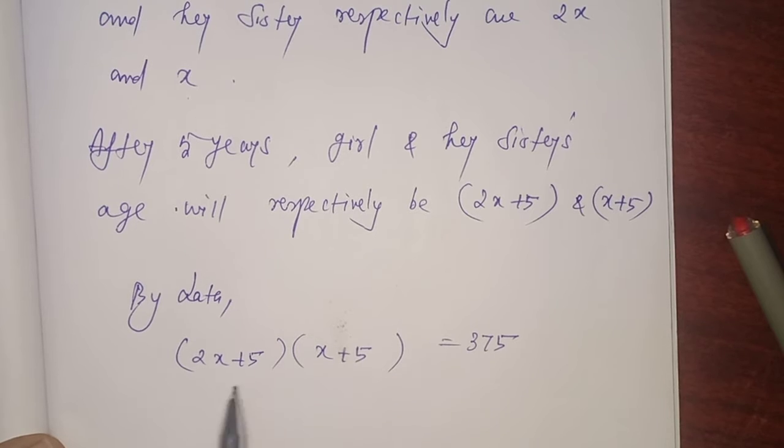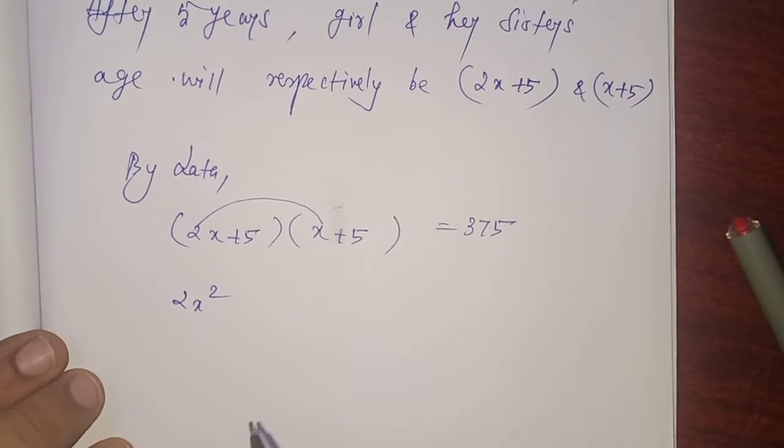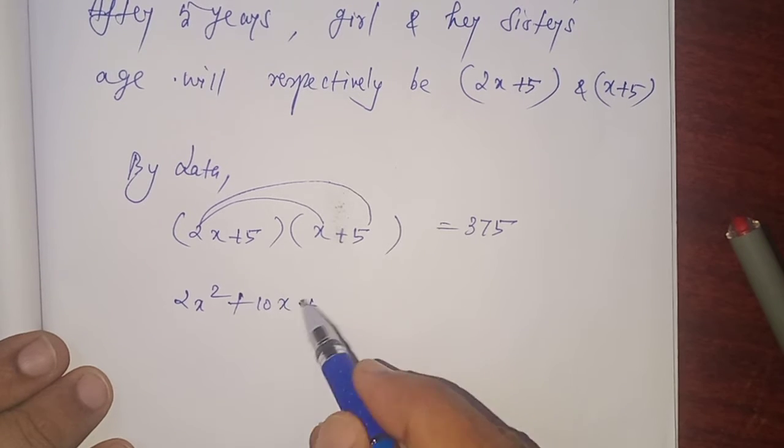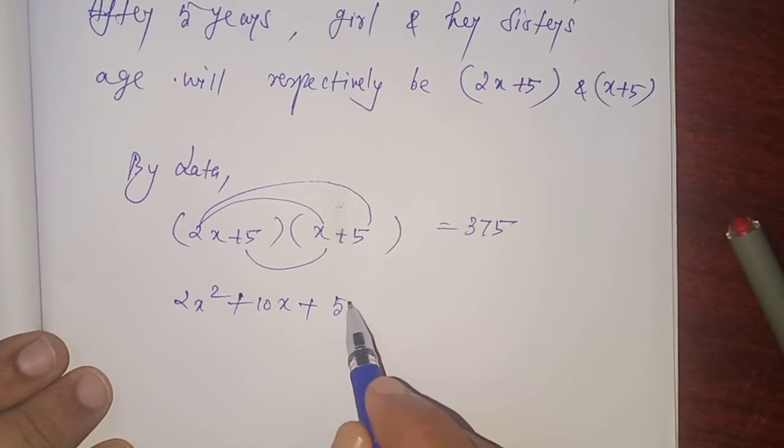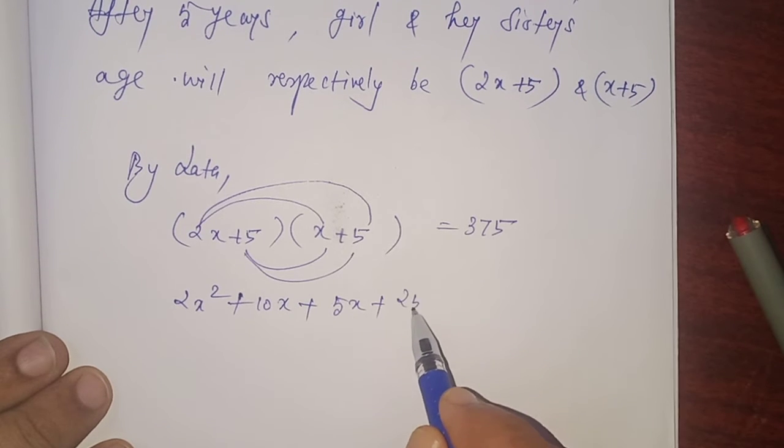Now, we have to frame the quadratic equation, then solve the equation and find the value of x. How to do? 2x into x that is 2x squared. 2x into 5 that is 10x. 5 into x that is 5x. 5 into 5 that is 25.